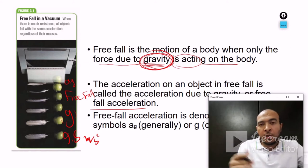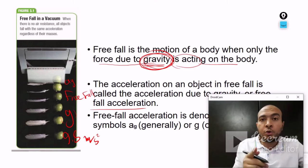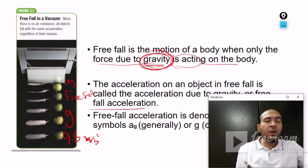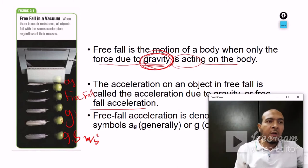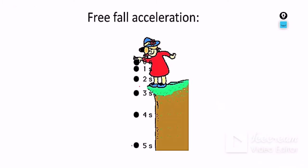Gravitational acceleration means the speeding up of an object due to Earth's gravity. It equals approximately 9.8 meters per second squared on Earth's surface. Of course, it will be different on Mars or the moon. You should understand and memorize this number — 9.8 is for Earth; other planets have different values.